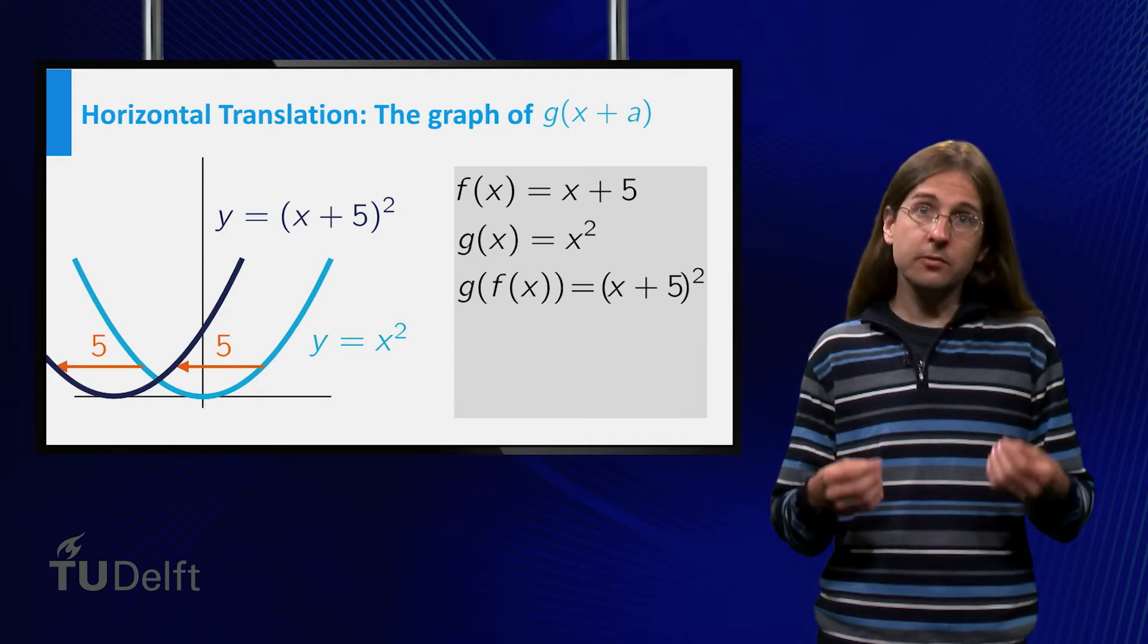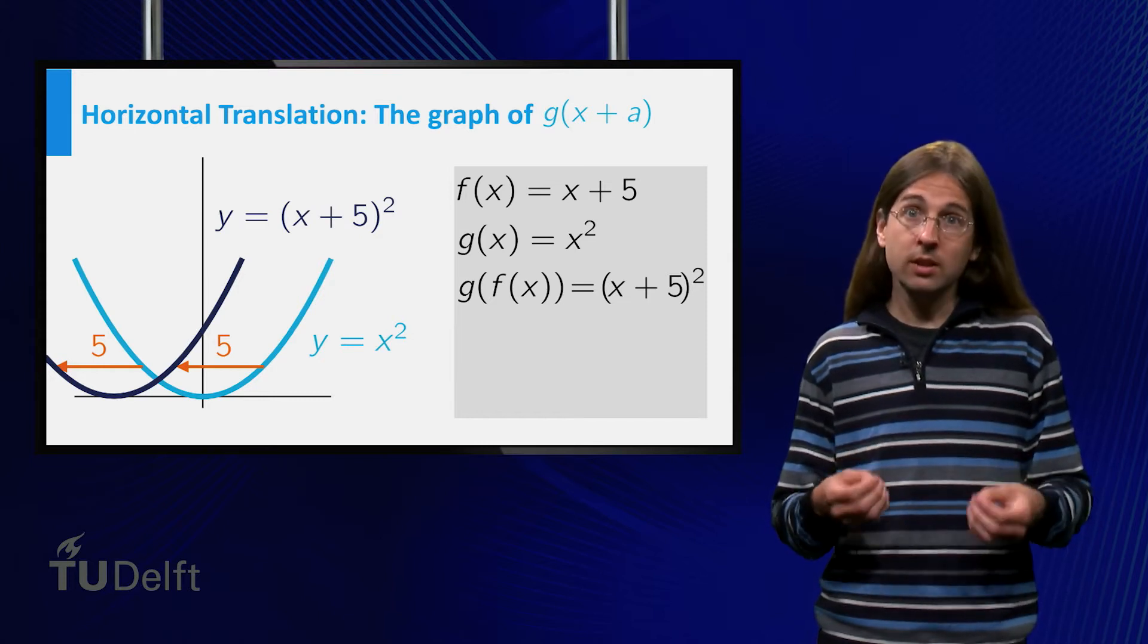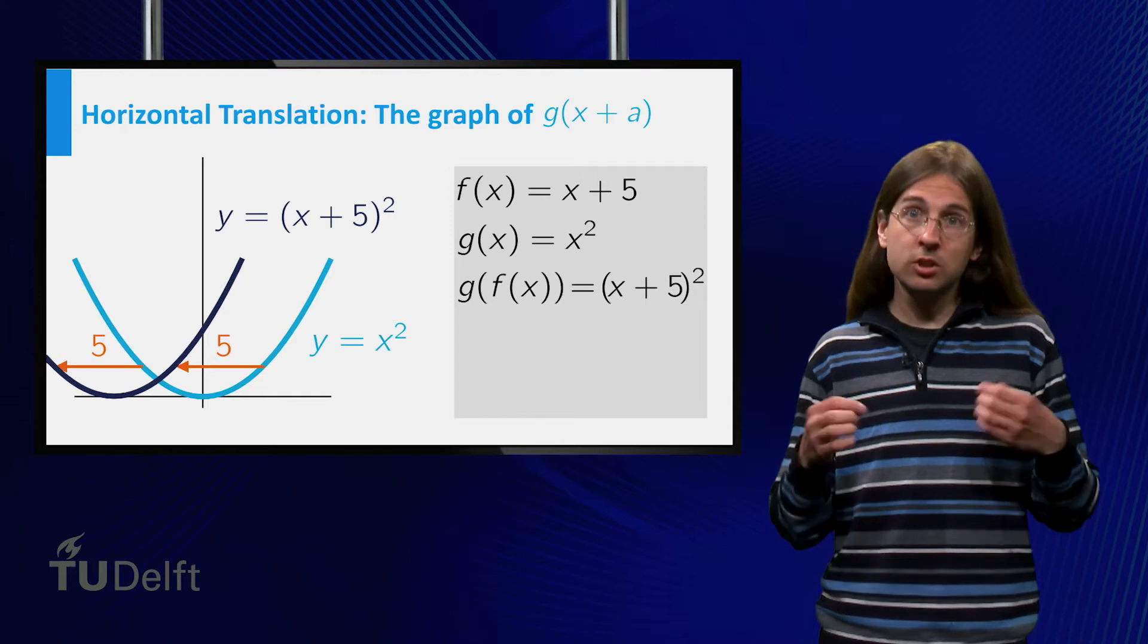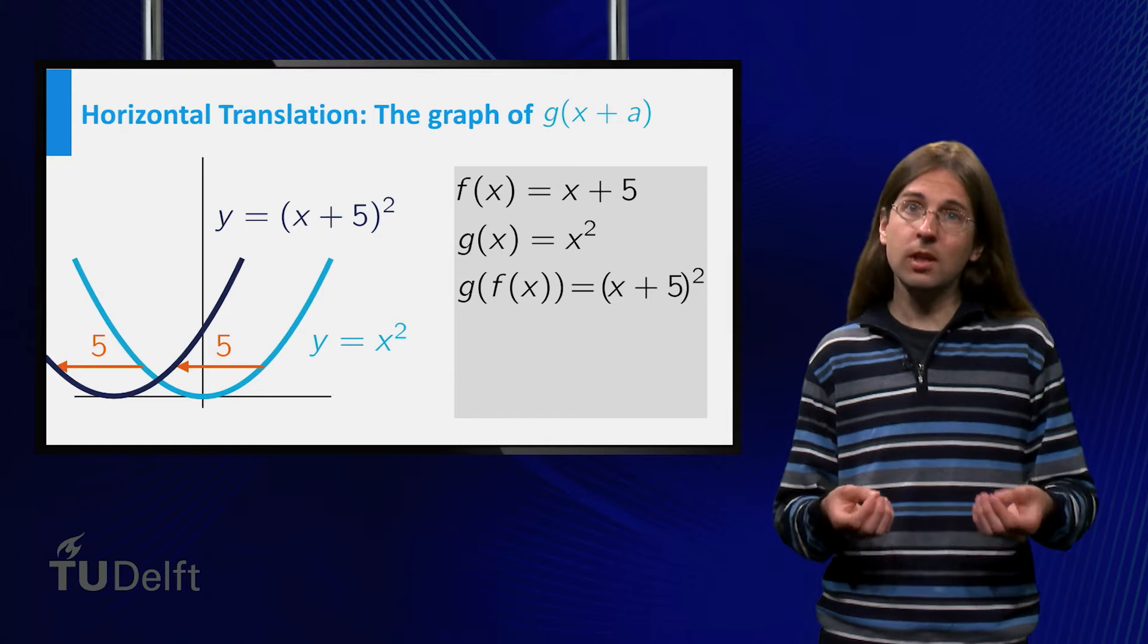Thus the graph of the function is the same, but for x plus 5 squared the x values must be reduced by 5, that is, the graph must be shifted to the left.